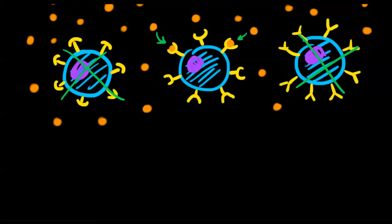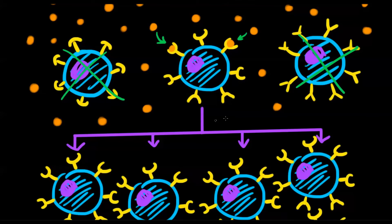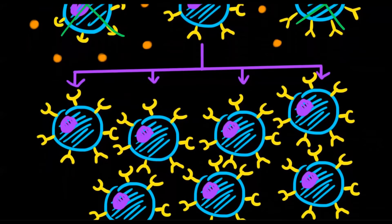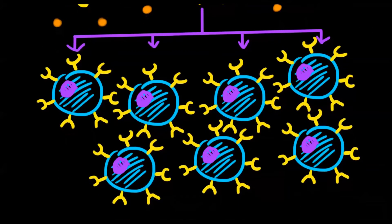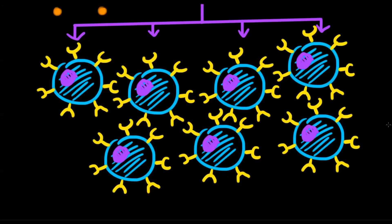The cell would respond by reproducing rapidly, producing many more immune cells with the same receptor. Many more immune cells that also possess the ability to detect this antigen and destroy the invading pathogen.